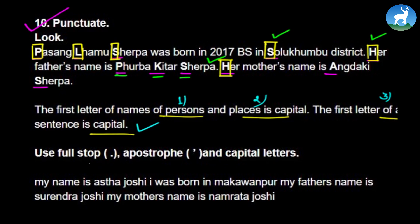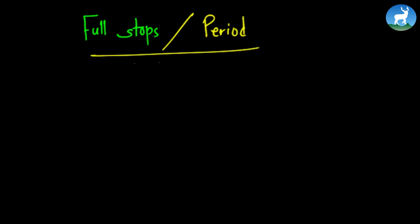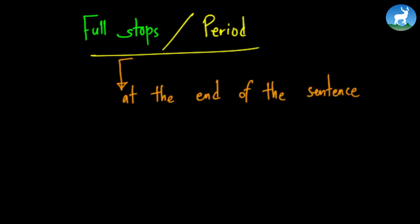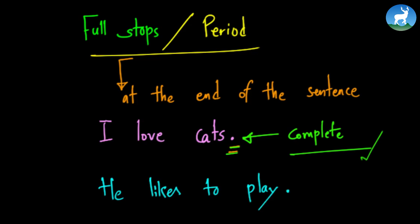You should know when to use a full stop, apostrophe, and capital letters. Full stops, or periods as Americans call them, are used at the end of a sentence to show the thought is complete. For example, 'I love cats.' or 'He likes to play.' — once the thought is complete, we put a full stop there.